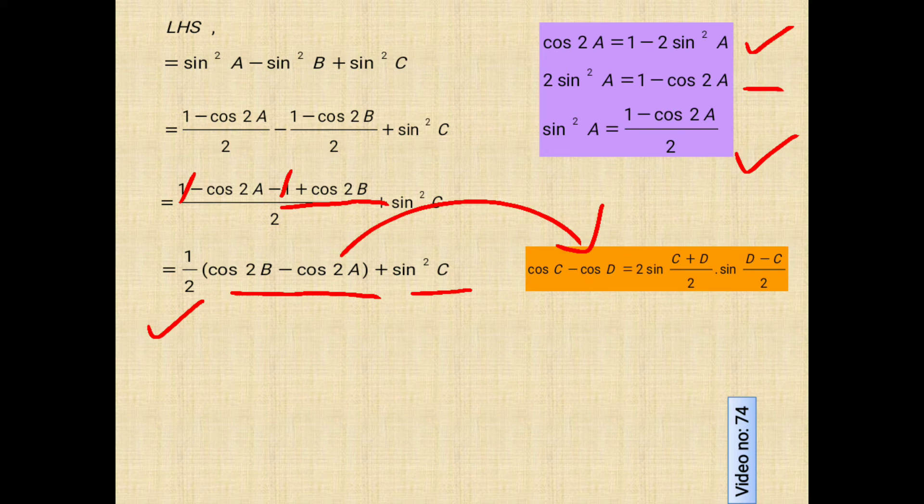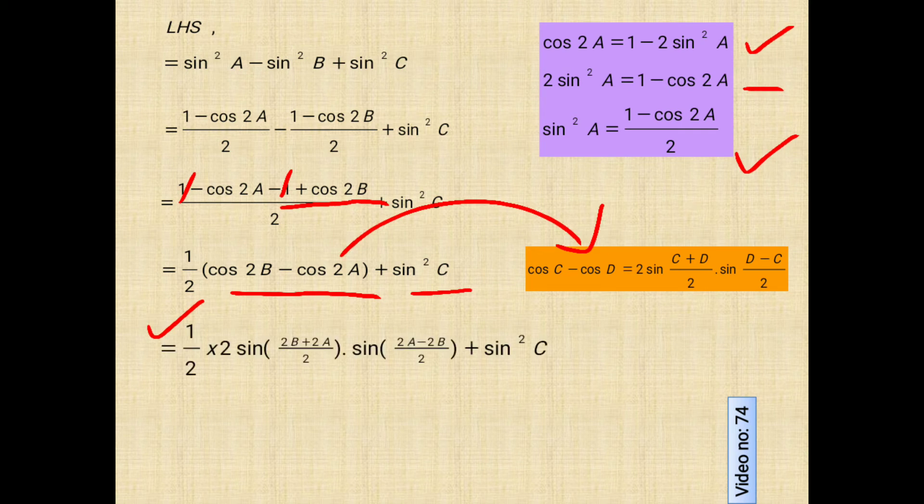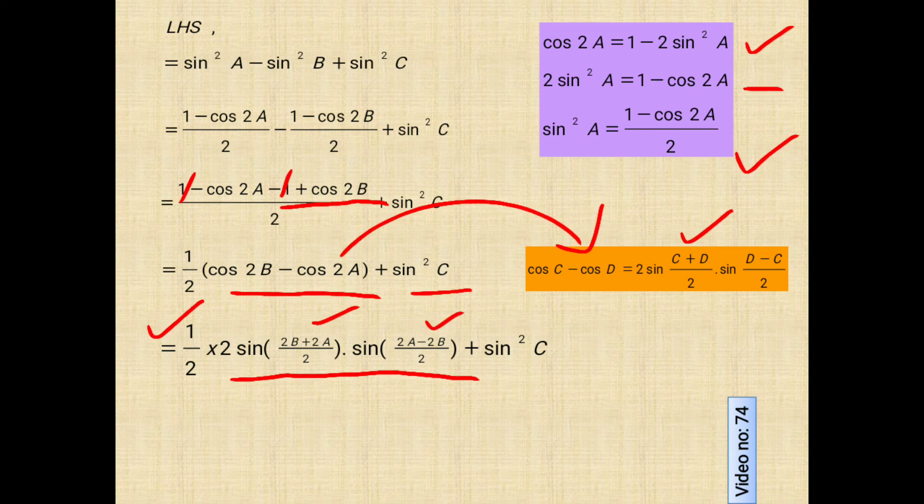And this can be written as 1 by 2 into 2 sin 2B plus 2A whole divided by 2 into sin 2A minus 2B whole divided by 2. This 2B plus 2A by 2 is same as C plus D by 2, and 2A minus 2B by 2 is same as D minus C by 2.